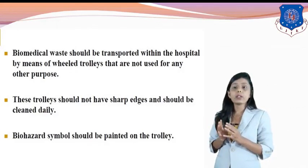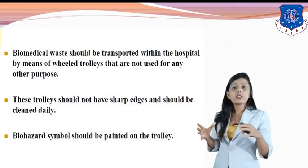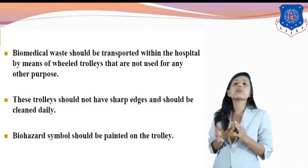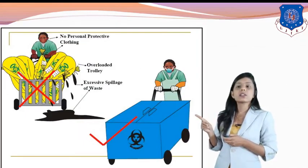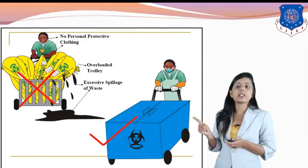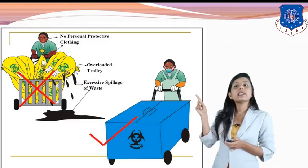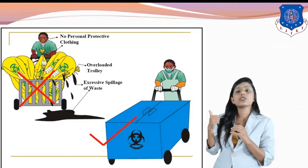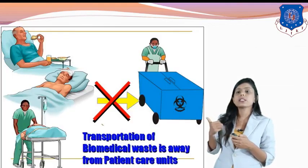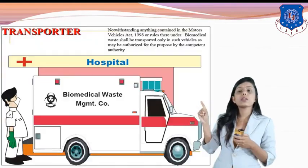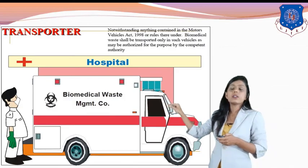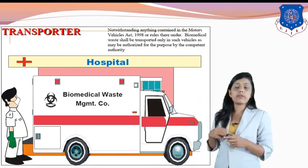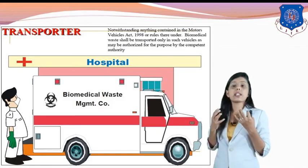If by accident there is spillage of waste, the whole area must be cordoned off, washed, and cleaned properly. Transportation should be away from patient care units. The vehicle transporting biomedical waste should display the biohazard symbol and be labeled to indicate it contains biomedical waste, so that in the event of an accident, people can act accordingly because it contains infectious waste.